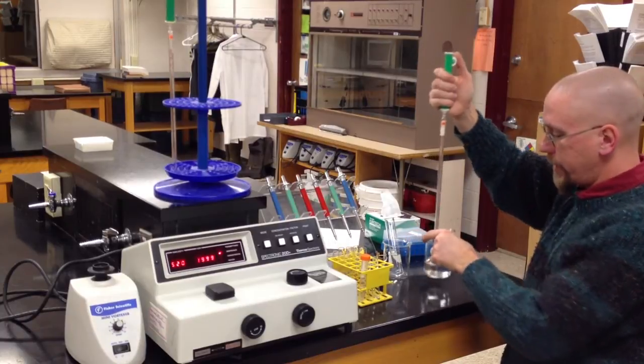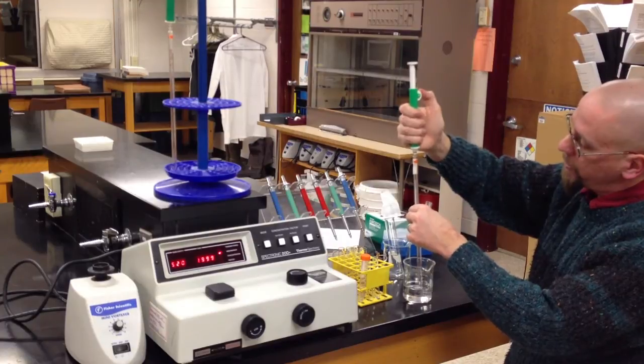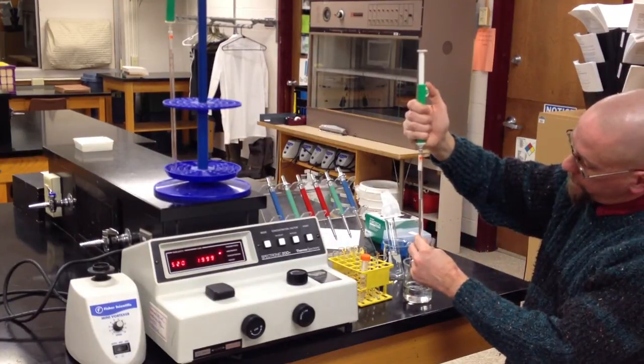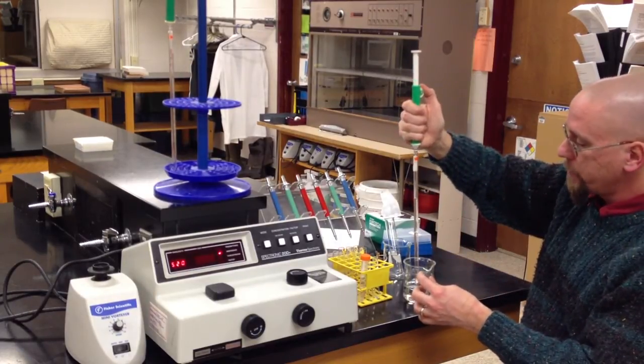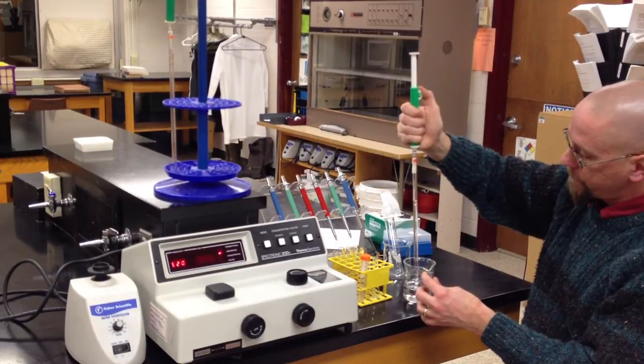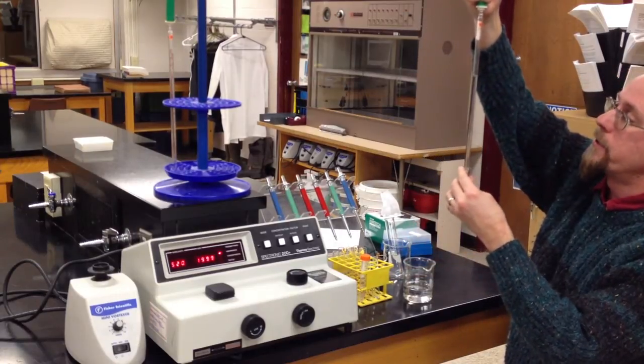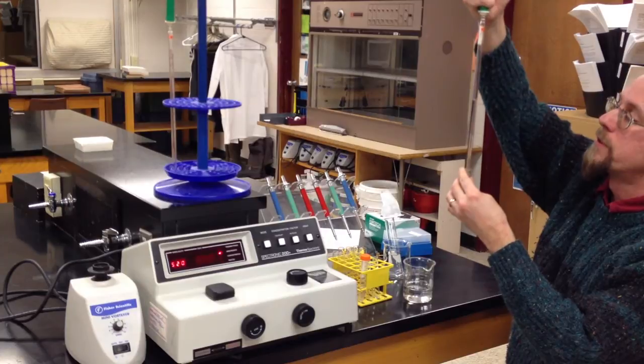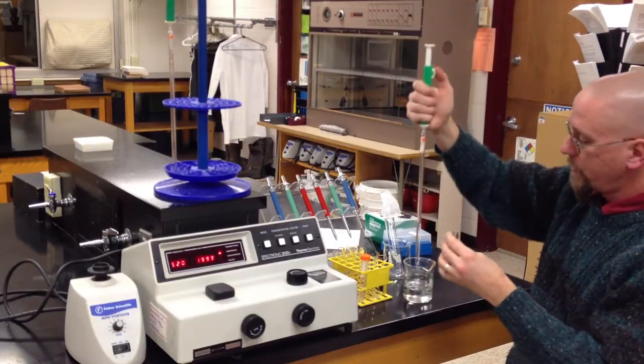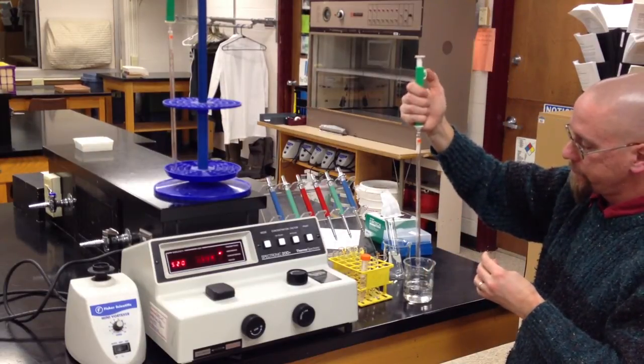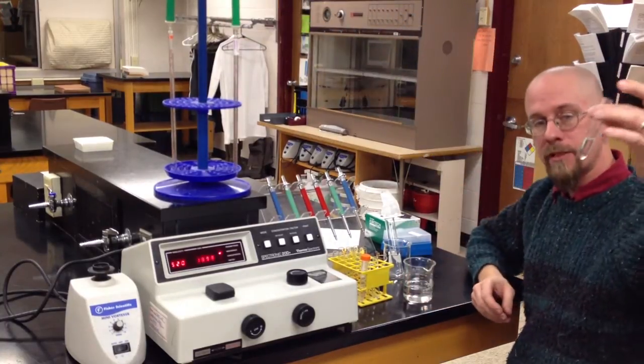So what I'm going to do here is I have a beaker of deionized water. I'm going to use the thumb wheel on the pump, draw up a full 10 milliliters of deionized water, so it's up to the zero. And I will know that I'm accurate when I come over and I deliver down to one, two, three, four, five. Put the rest back. Set my pipette in the rack. Now I have five milliliters of deionized water.